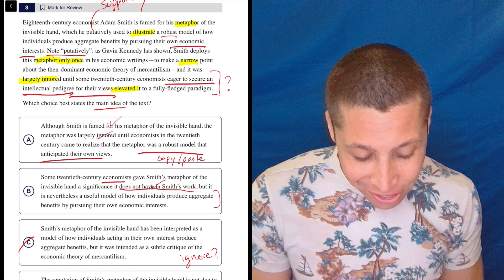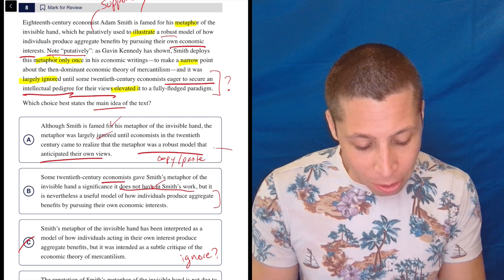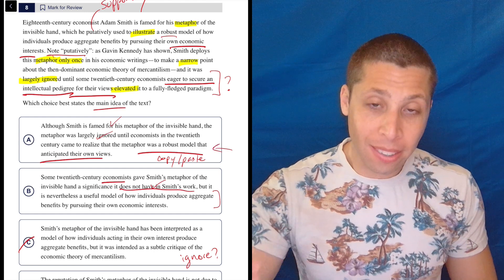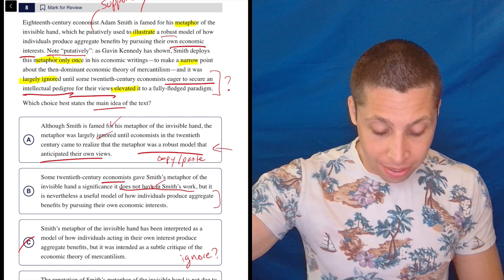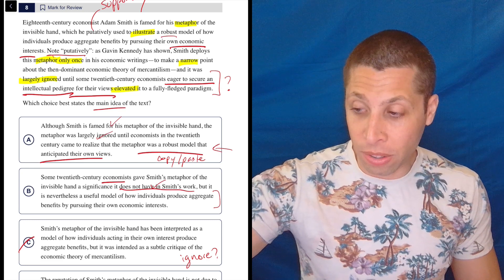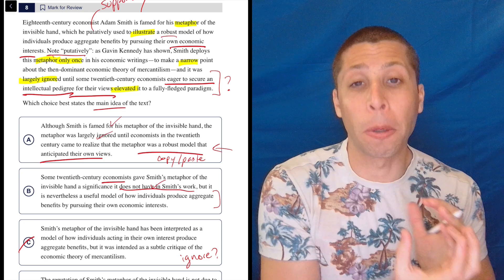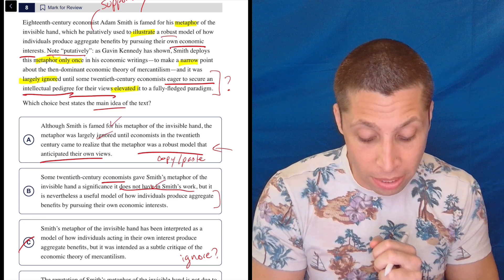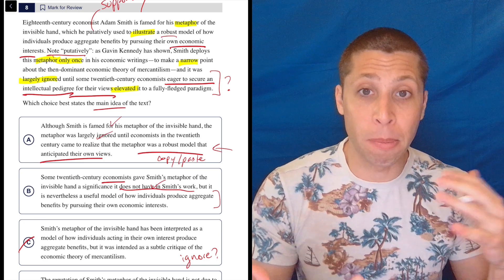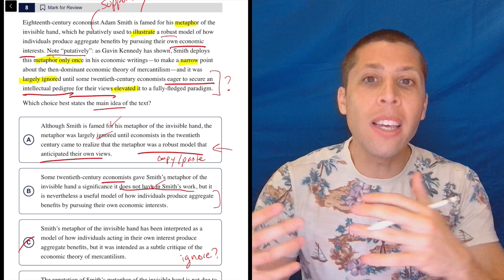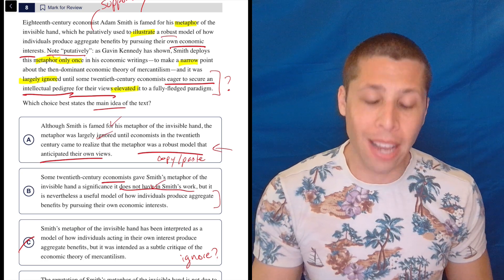We are not saying that we realized later that the metaphor was actually about something else. It was never about anything other than mercantilism. It was just been repurposed by these people for their own selfish reasons, not because Adam Smith was kind of foreseeing the same point that they were making. And that's what A is trying to say, is that Adam Smith and these economists are using this metaphor in the same way.